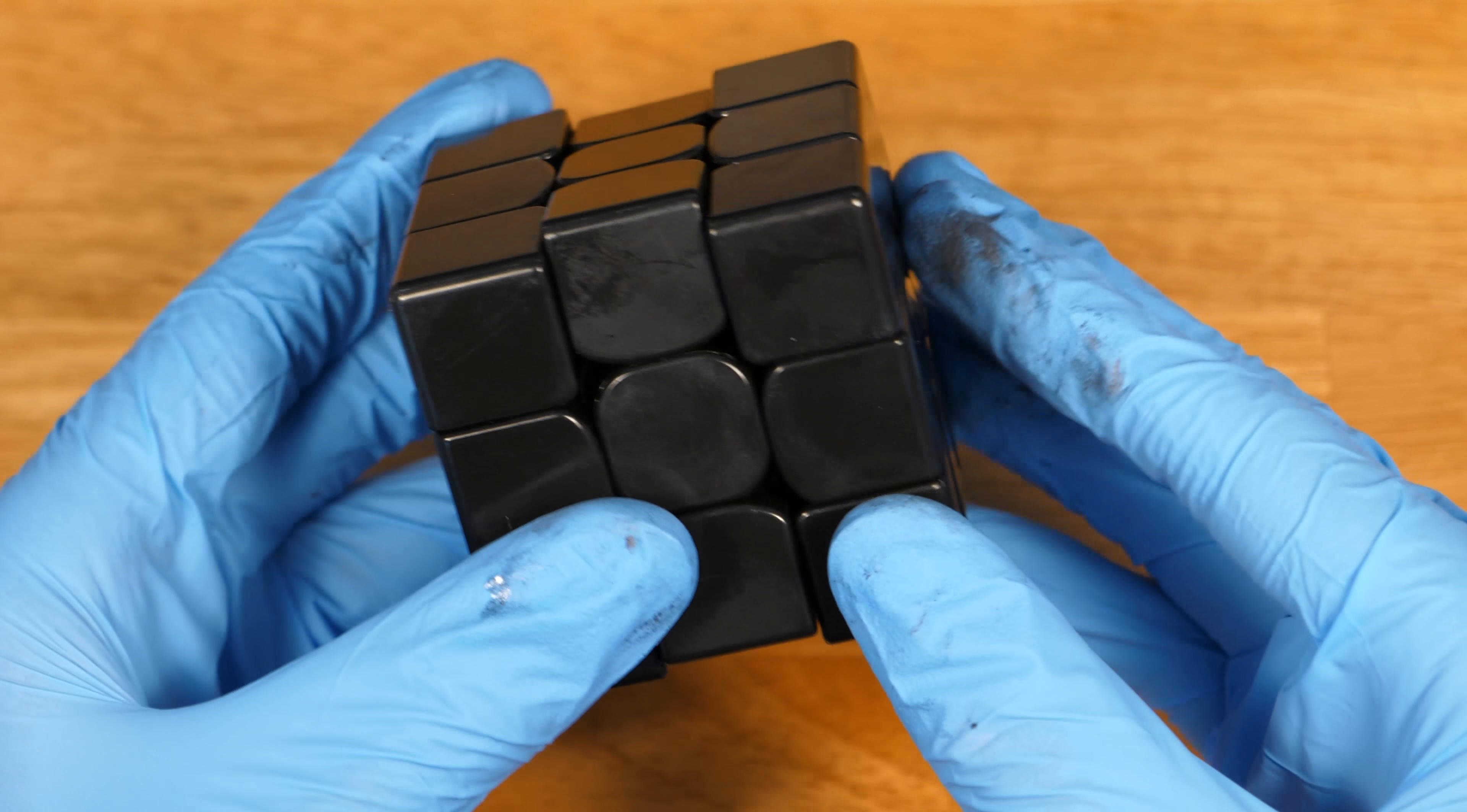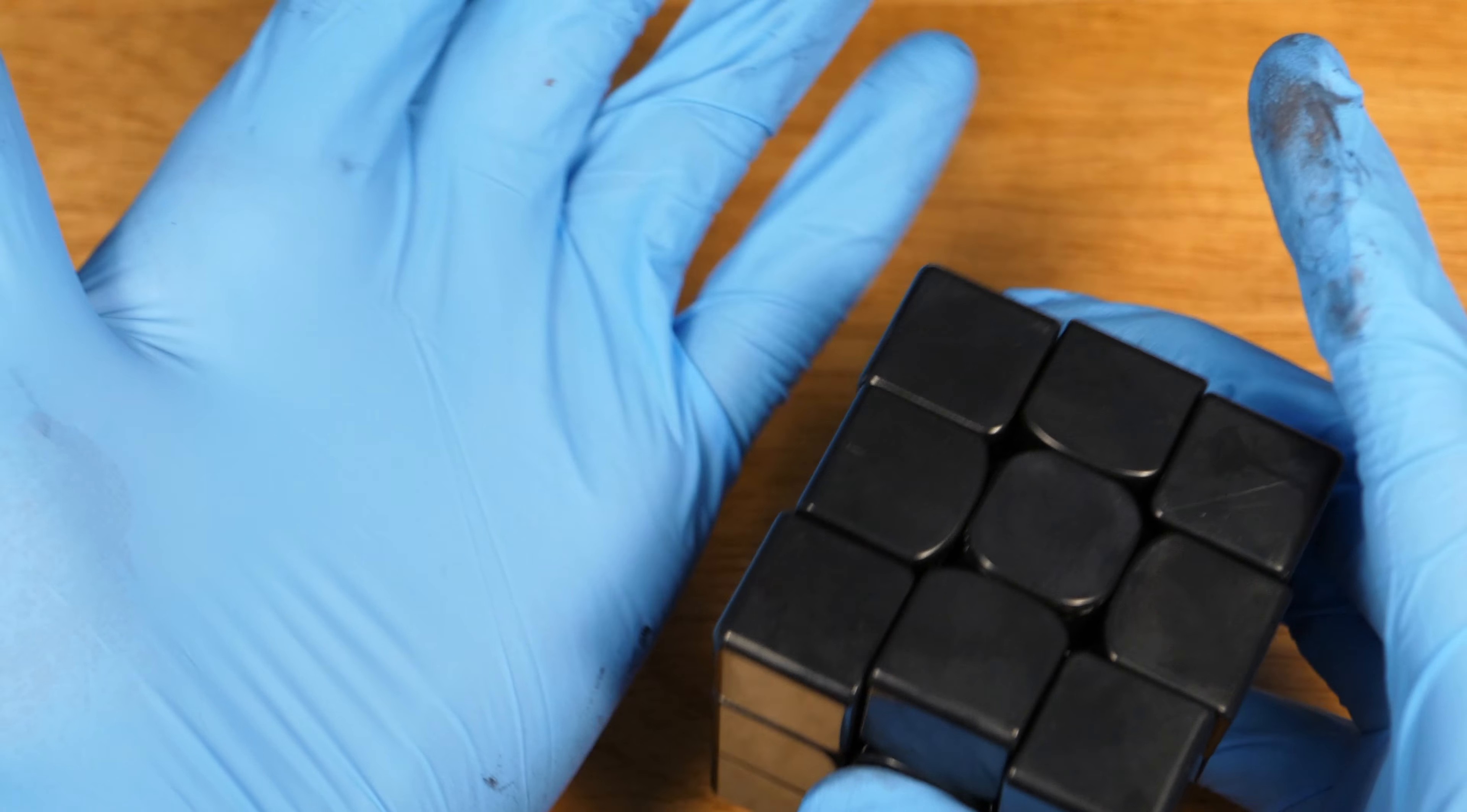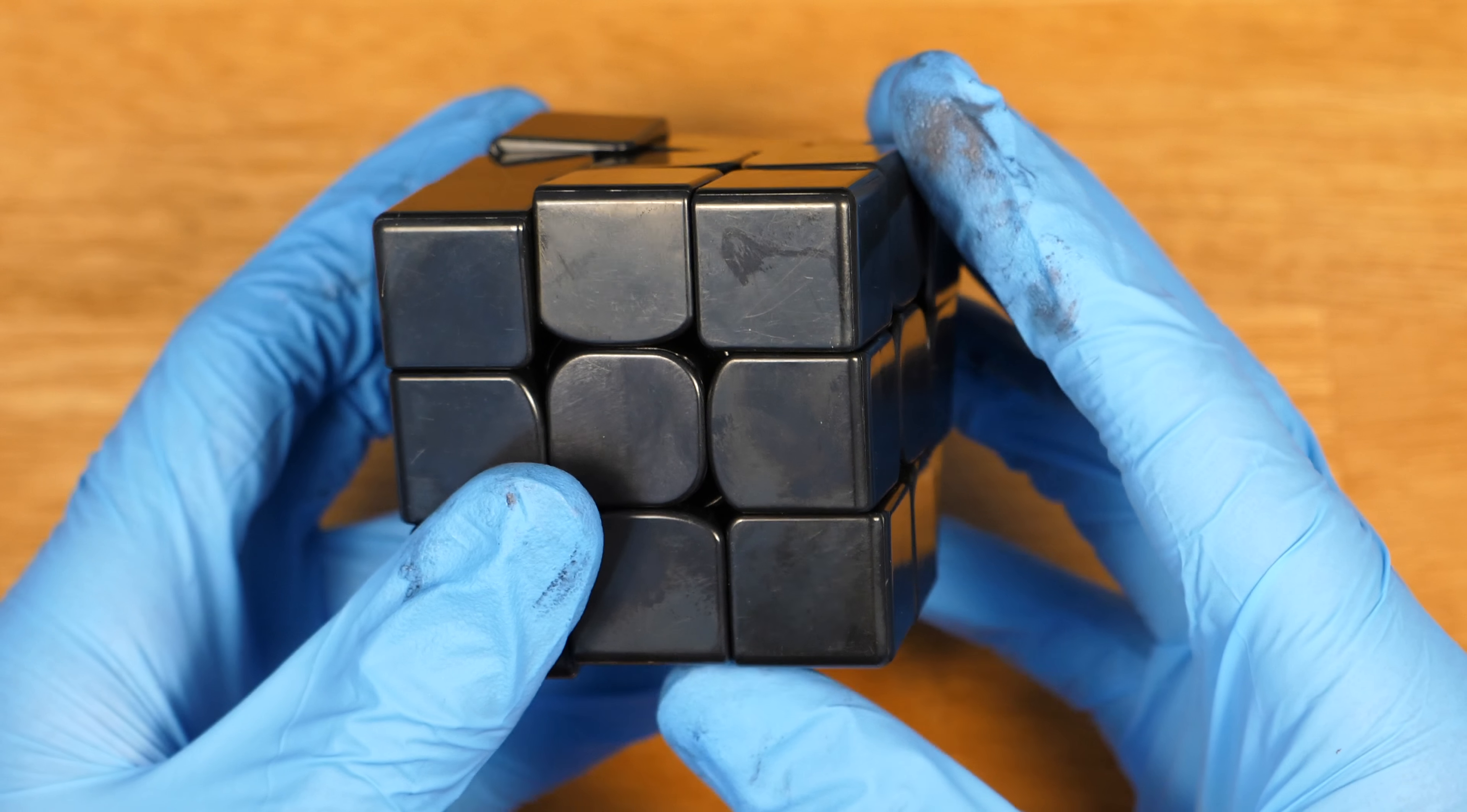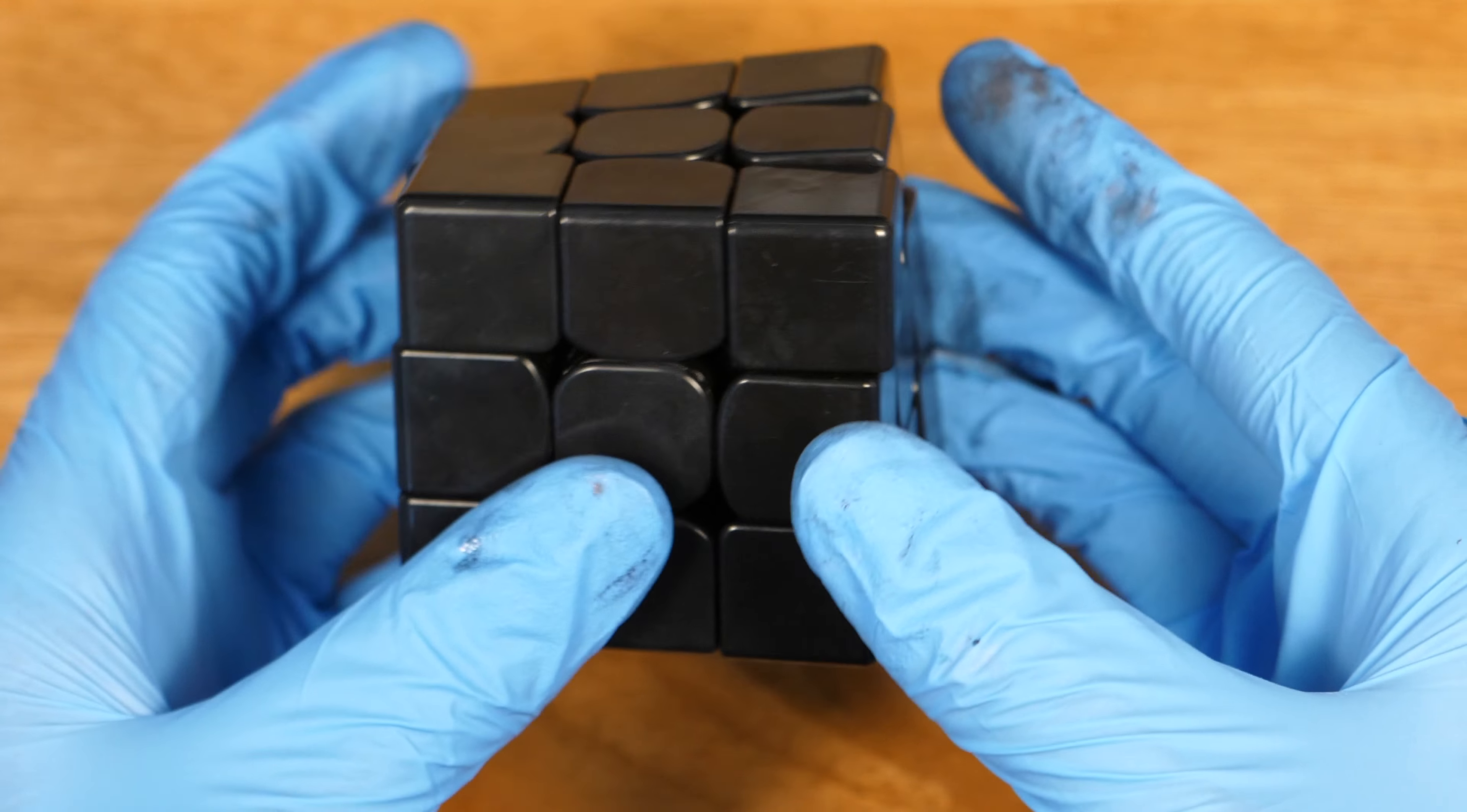So I've just put Lubicle Black in the cube. As you can see, the gloves are a bit stained in some locations. So the gloves are definitely key. These would be black stains on my hands for weeks. So let's just see how the Lubicle Black affected the cube.